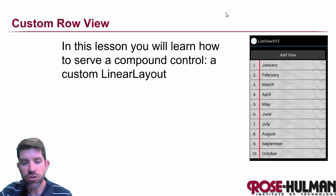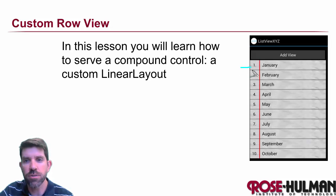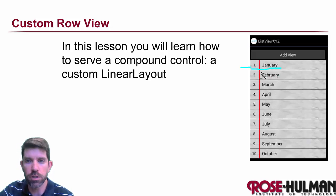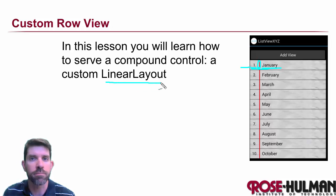Hi there. So far each row in our list view has had only a single item, whether it be a text view or a button or an image. But what we want to do is shift gears and let each row consist of multiple things — a compound layout. So we might have a text view, a divider view, and another text view. To do that, we're going to use a linear layout, building it up one step at a time.